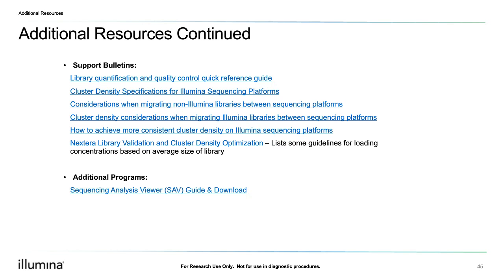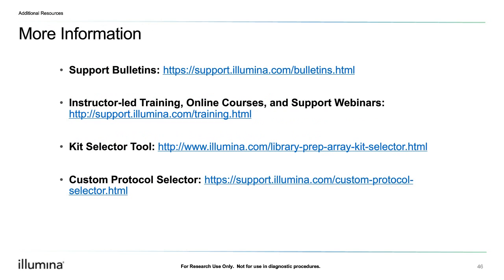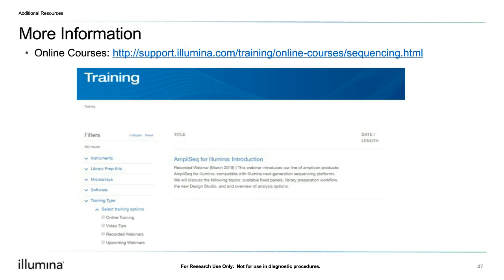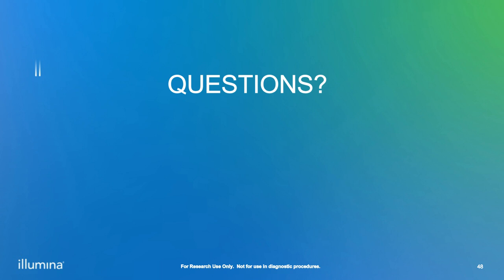Additionally, we have bulletins pertinent to this conversation and a link to the Sequencing Analysis Viewer program, which can be downloaded and installed on any Windows operating system. For more information about anything Illumina, please feel free to browse the additional resources linked here. We've recently updated the kit selector tool and custom protocol selector, both of which are more user friendly, as well as the online courses page where you can filter recorded or upcoming webinars and training videos. Thanks so much for your time today — if you have any questions, please feel free to put them in the chat now.